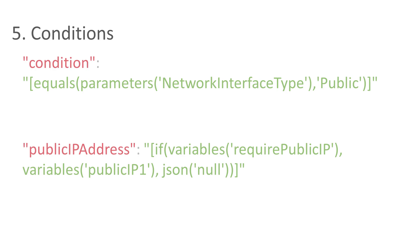There are two concepts we're going to look at today: conditions and if. These are two different ways of doing conditionals inside your template, and they both have different purposes. A condition is used to define whether or not to deploy a top-level resource. You can only use this at the resource level, and you apply a condition based on some logic to decide whether or not to deploy that resource as a whole. If your condition evaluates to false, that resource will effectively be a no-op and will not be deployed at all. But if you want to change a property or configuration of a resource based on a value, you can't use condition for that — that's where if comes in. If is a function that allows you to evaluate a statement and do something if it's true, and something else if it's false, and it can be applied at the property level rather than needing to be at the resource level.